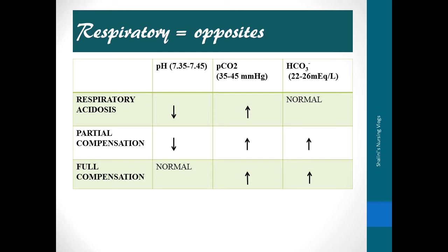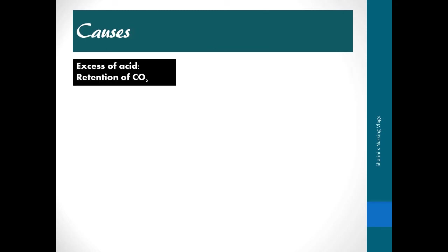For ABG interpretation — in respiratory acidosis, using ROME, if pH decreases, pCO2 should increase. The pH will be below 7.35 and carbon dioxide is retained, so pCO2 increases. When there is renal reabsorption of bicarbonate, bicarbonate also increases — this indicates partial compensation. Full compensation occurs when the bicarbonate increase, along with supportive therapy, normalizes the pH back to the range of 7.35 to 7.45.